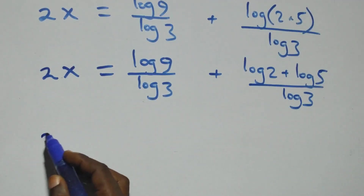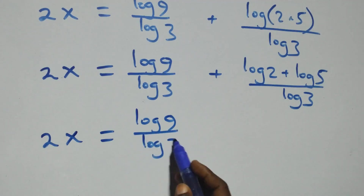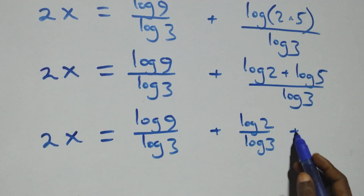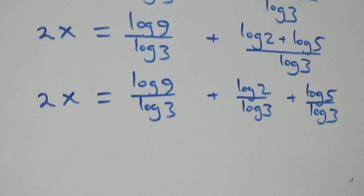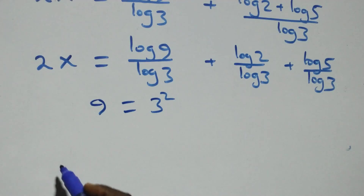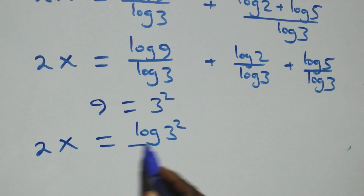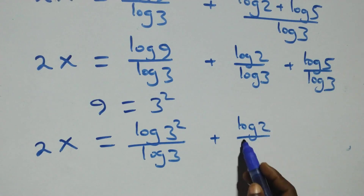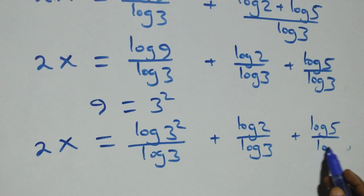Separating into two fractions, we have 2x equals log 9 over log 3 plus log 2 over log 3 plus log 5 over log 3. Also, 9 can be written as 3 times 3, which is 3 squared. So we have 2x equals log 3 squared over log 3 plus log 2 over log 3 plus log 5 over log 3.